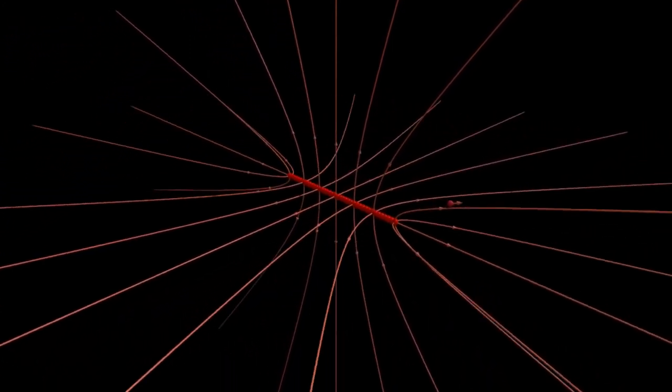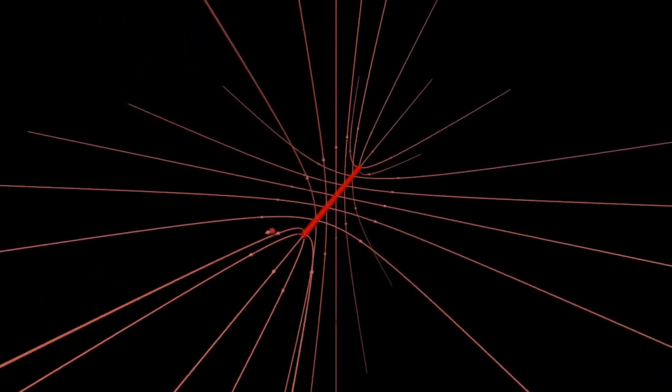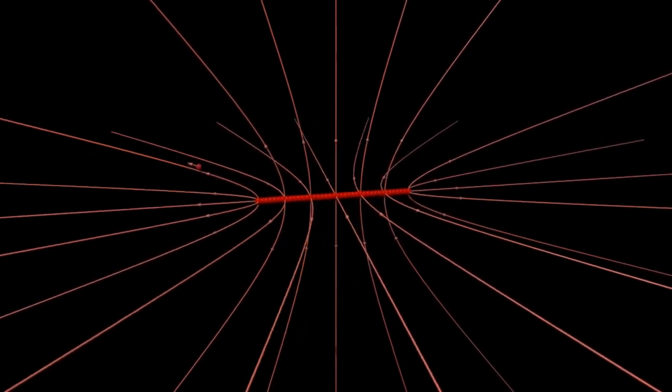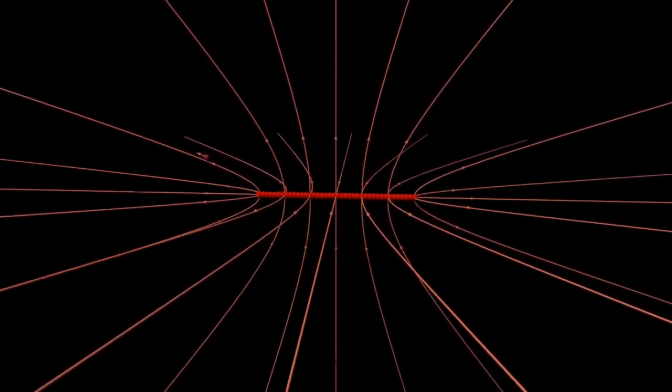At points much closer to the line than to the end points of the line, this axial symmetry improves. In the idealized limit of an infinite line of charge with a finite charge per unit length, the field lines would be expected to be directly radially outward from that line of charge.